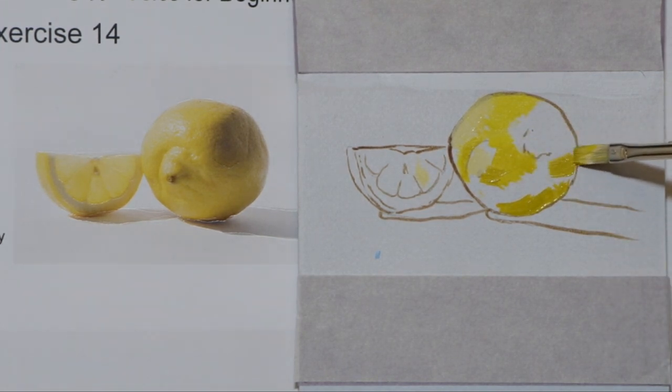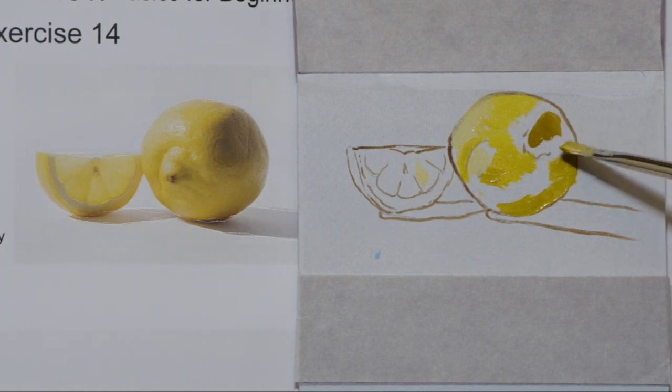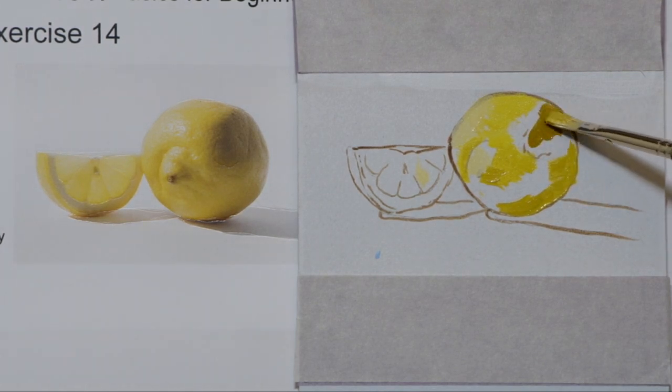You can see that building that up. Here is the darkest part, well mostly the darkest part, right underneath the lemon in the cast shadow. There will be a darker occlusion shadow.